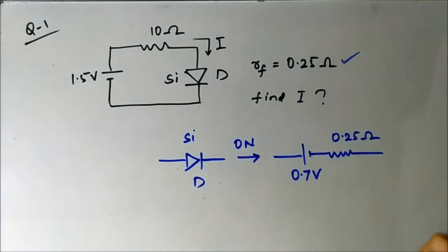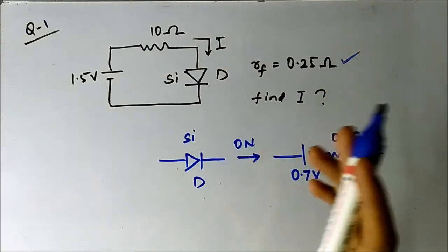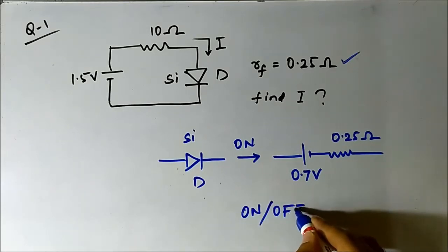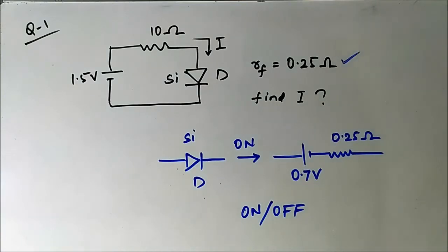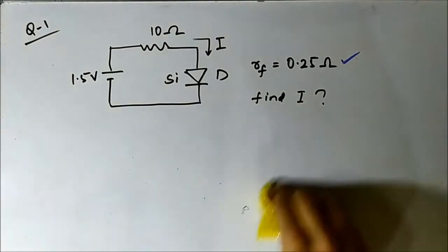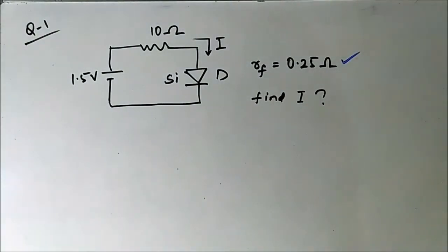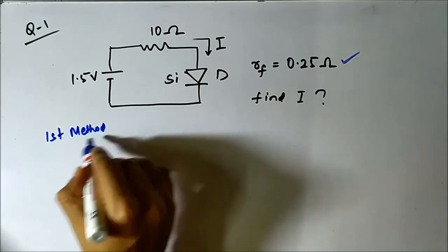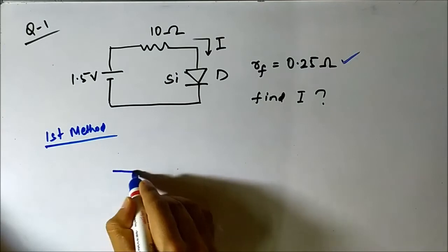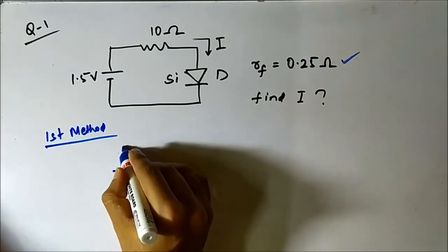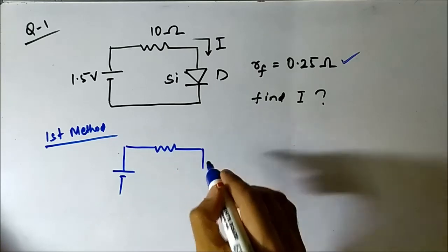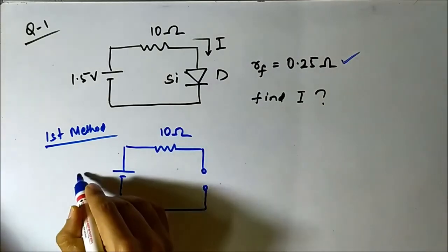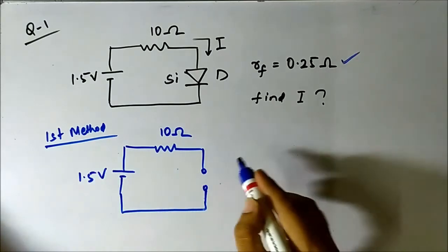The next important thing is to determine whether this diode is on or off. There are two methods to do this. The first method is to replace the diode with an open circuit — assume that the diode is off. We replace it with an open circuit, leaving the 10 ohm resistor and the 1.5 volt source.